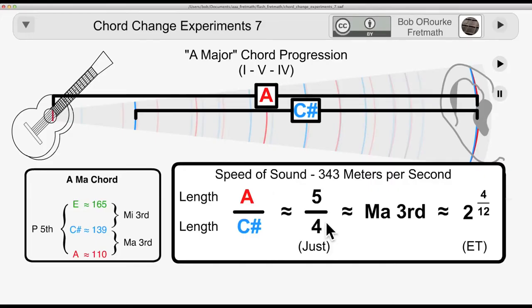In perfect or just intonation, you would get a ratio of 5 to 4. Equal temperament, it would be 2 to the 4/12ths. And no, I am not going to try and visualize the difference. You can hear the difference, but it's much too fine a difference to visualize it.